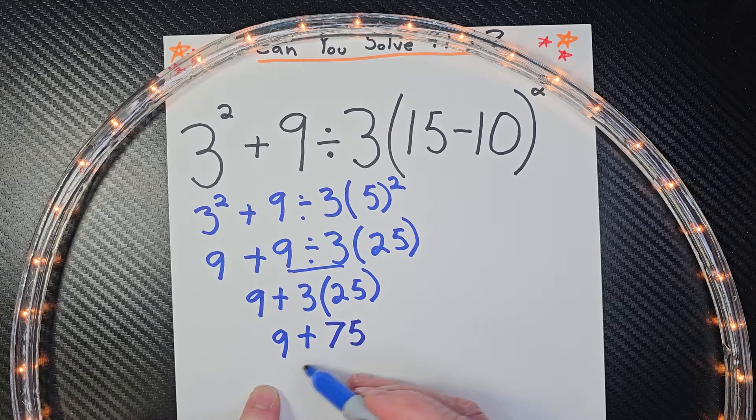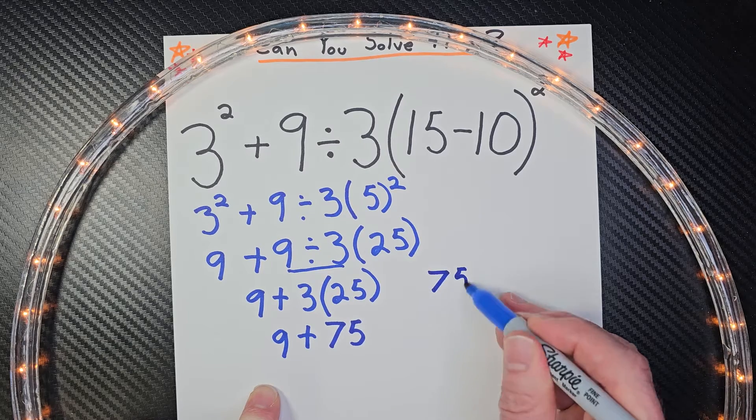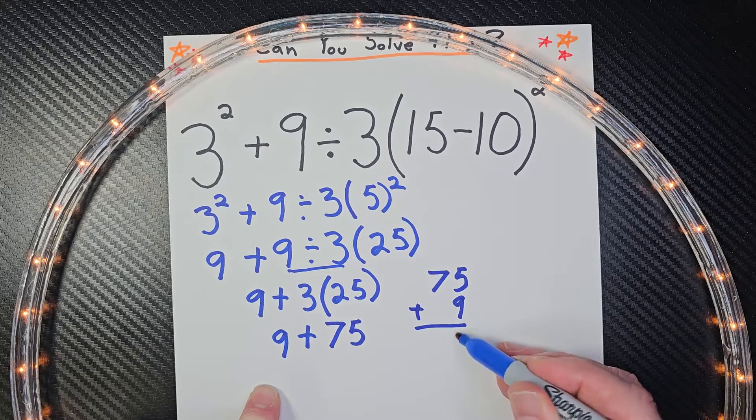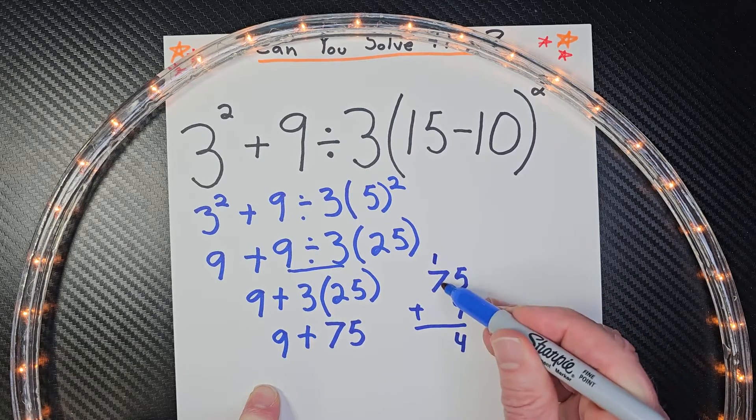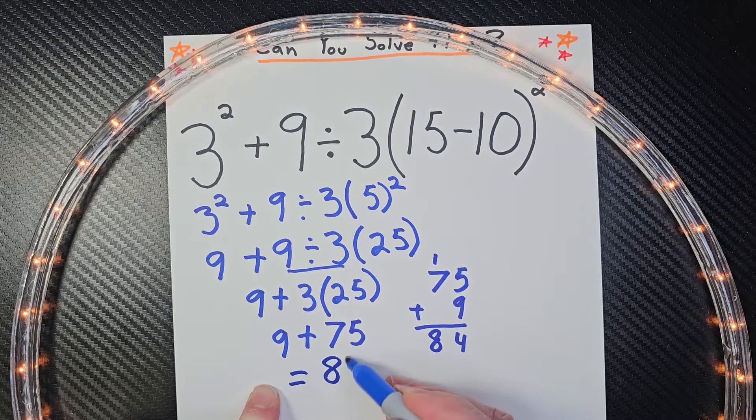And then we're going to take 75 plus 9. If you don't know how to do that, just put 75 right here. Rewrite the problem. So 9 plus 5 would be 14. Carry the 1 and then 7 plus 1 would be 8. So our answer is 84.